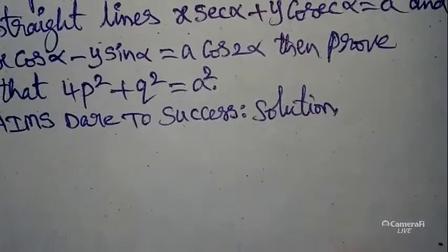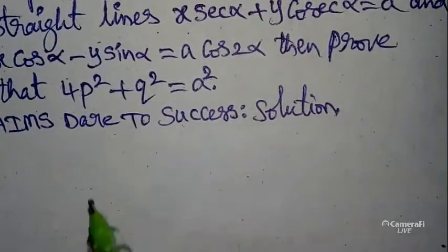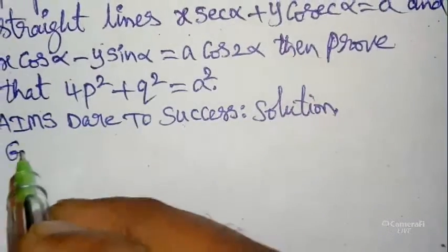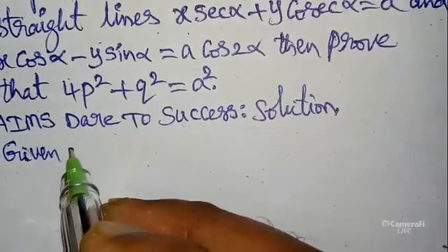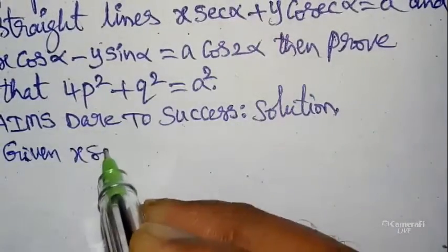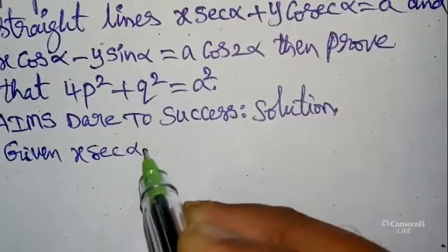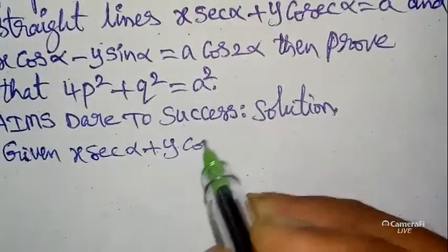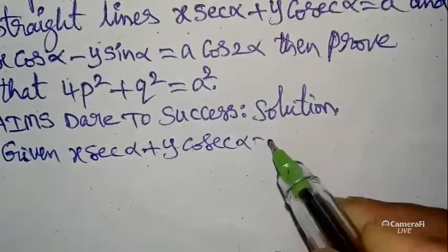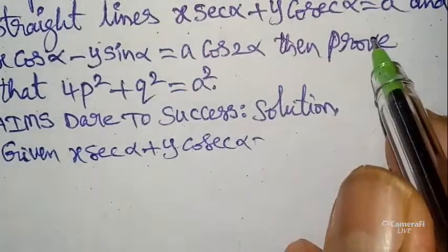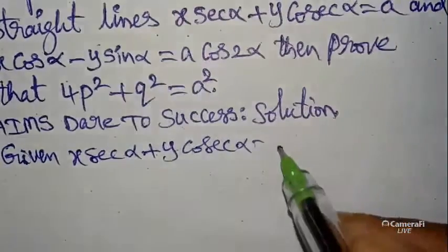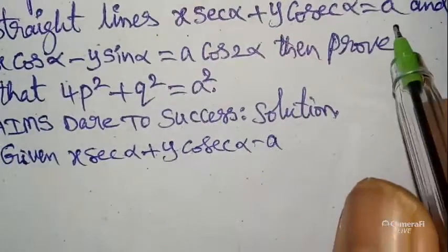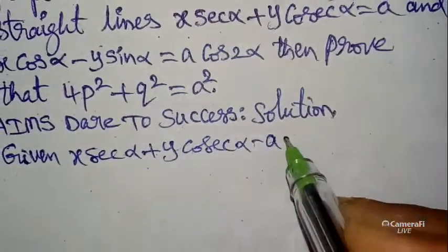The given equations can be written as: x·sec α + y·cosec α − a = 0, and bringing terms to the left side: x·cos α − y·sin α − a·cos 2α = 0.